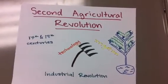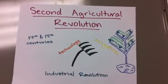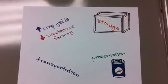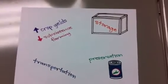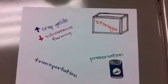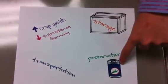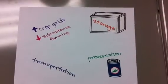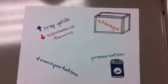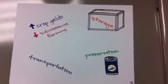The new agriculture technology decreased the dependence of farmers on other people and greatly increased crop yields. Because of the increased crop yields, subsistence farming declined and farmers started to sell excess harvests. Additionally, farmers increased storage sizes to hold excesses and developed canning techniques to preserve food for longer periods of time. Farmers were now able to sell their products over longer distances because of the creation of trains and other transportation.